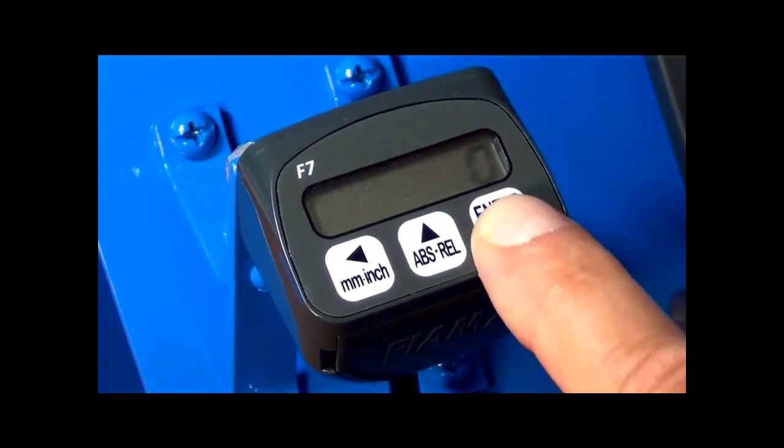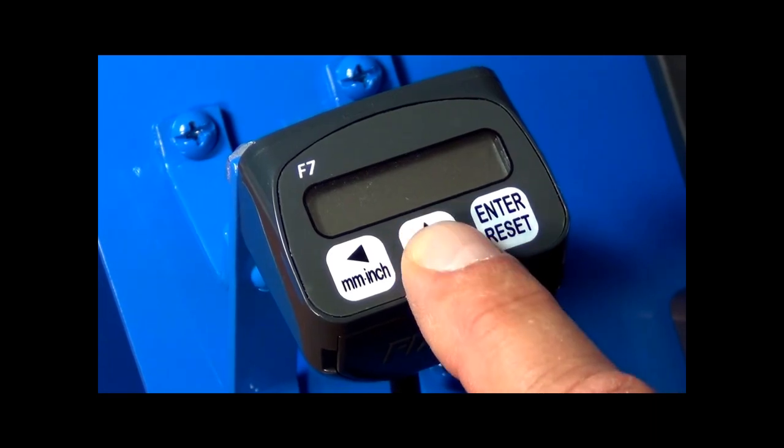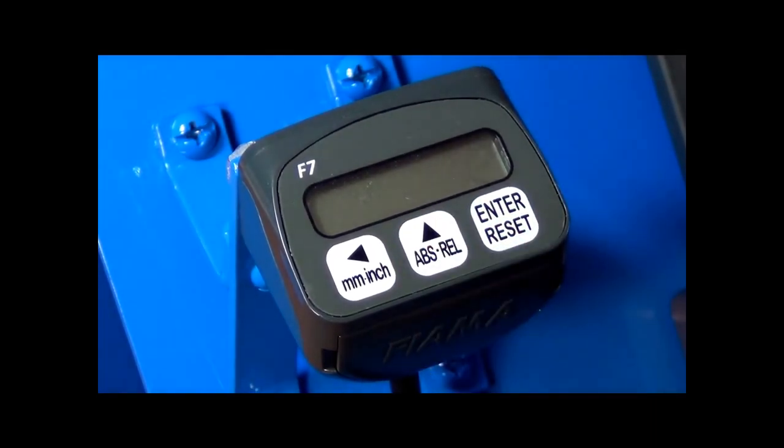Depress the ENTER key until the number of decimals desired is flashing, and then depress the COUNT UP key until 2 is displayed. Then depress the ENTER key.